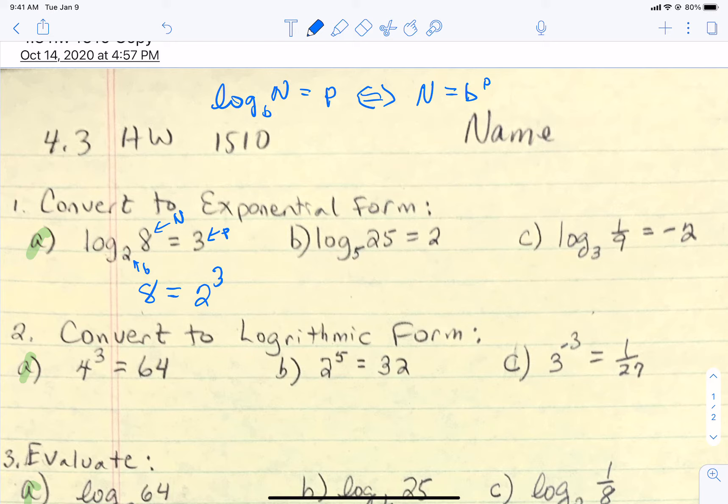So the number 8 is the base 2 to a power of 3. And that's what you want to do for 1a, b, and c. You're just rewriting it. You're not solving it, you're not doing anything. You're just trying to take that log form and write it in exponential form. Anybody have any questions about 1a?